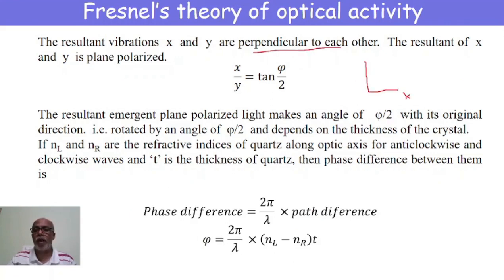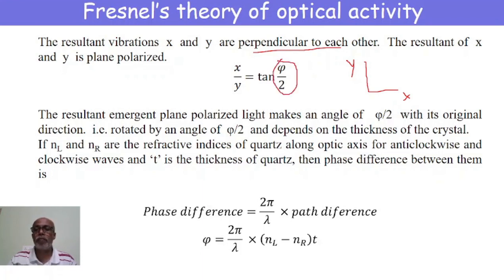The resultant vibrations x and y are perpendicular to one another, and their resultant is plane polarized, given by x/y = tan(φ/2). The resultant emergent plane polarized light makes an angle φ/2 with respect to the original incident plane polarized light. Therefore the angle of rotation is φ/2, which depends on the thickness of the crystal.